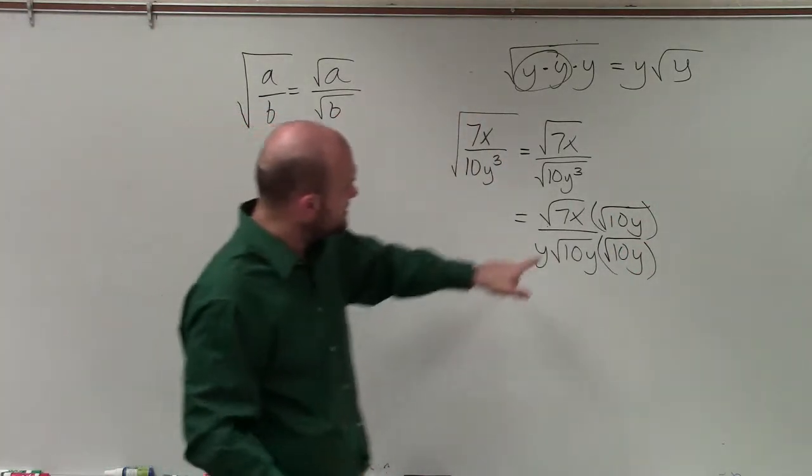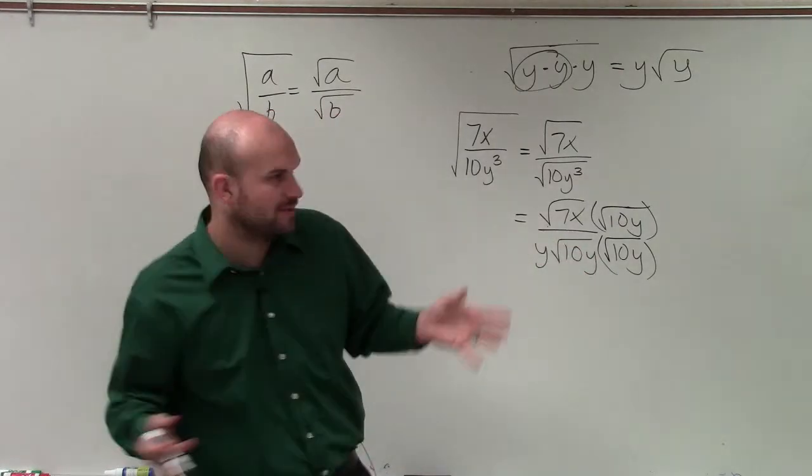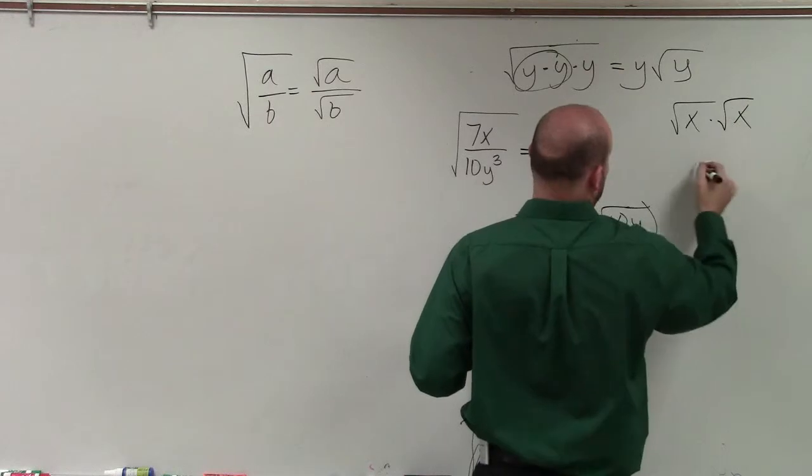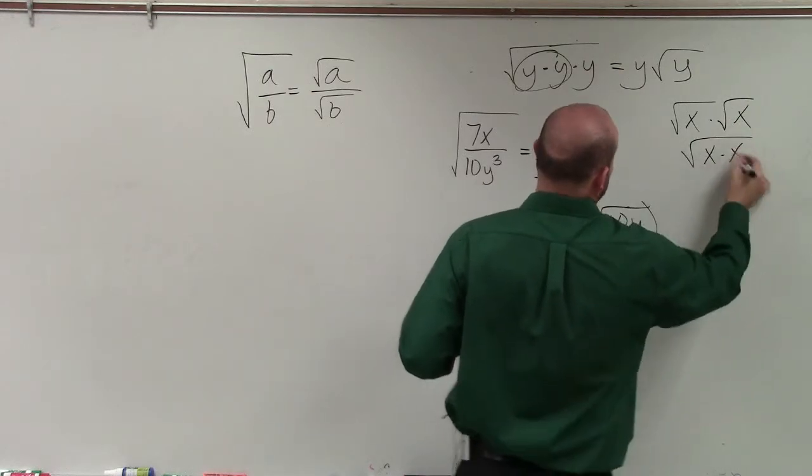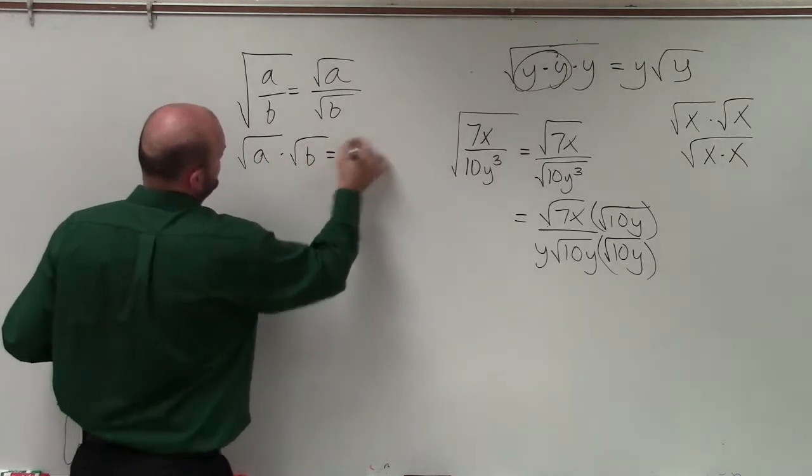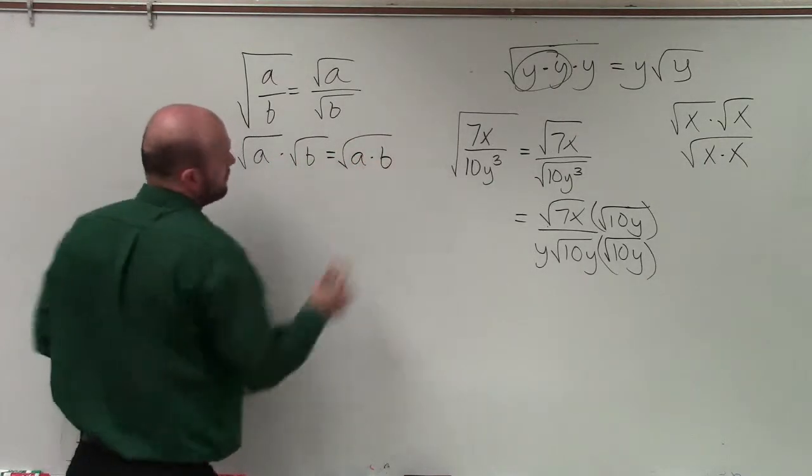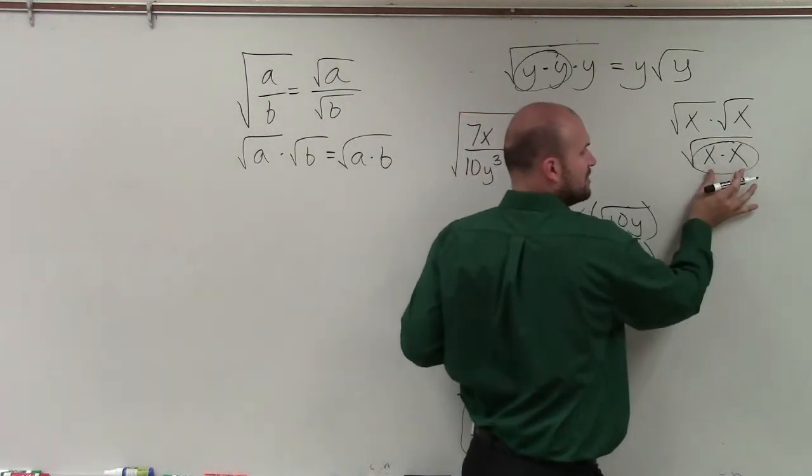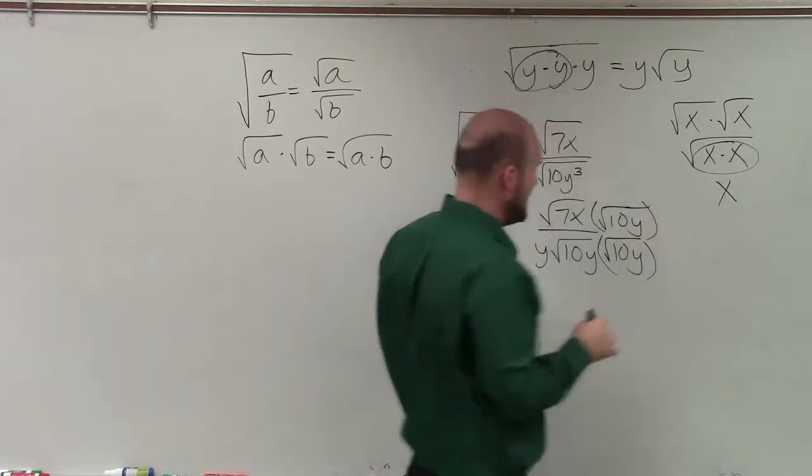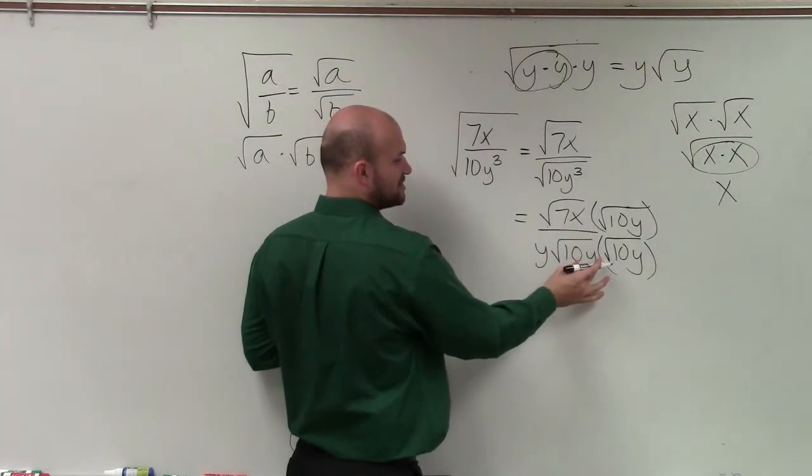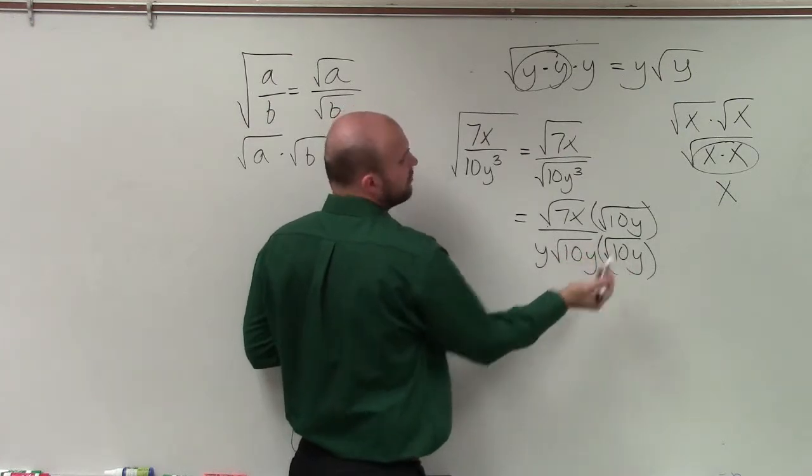But what's important about this is the square root of any number multiplied by itself. For instance, just the square root of x times the square root of x equals the square root of x times x, which is the same thing that we have here. a times the square root of b is equal to the square root of a times b. Well, since these numbers are the same, I can pair them up and take the square root of a pair of numbers, which is just going to equal x. So therefore, here, my denominator is just going to be 10y.